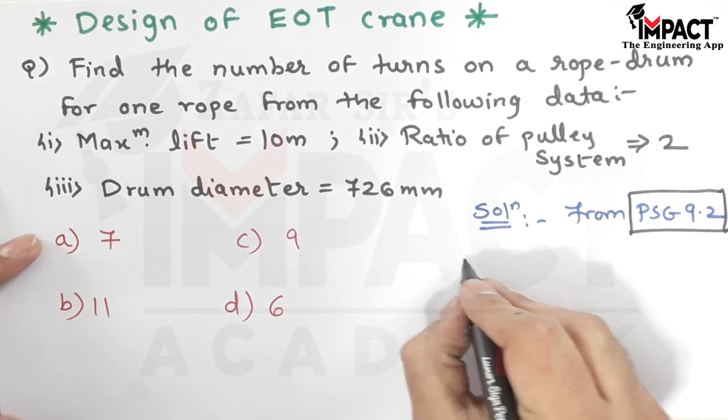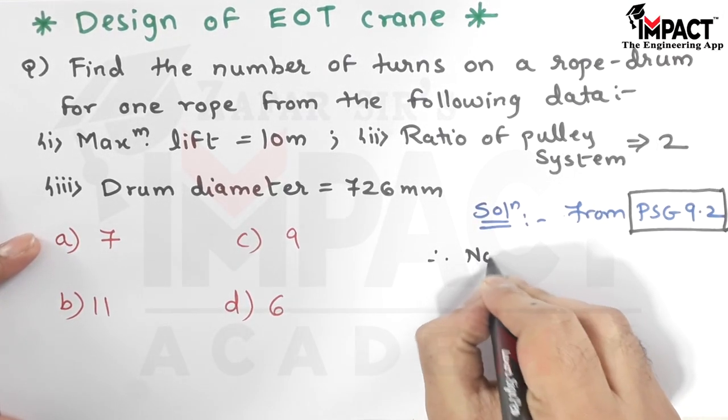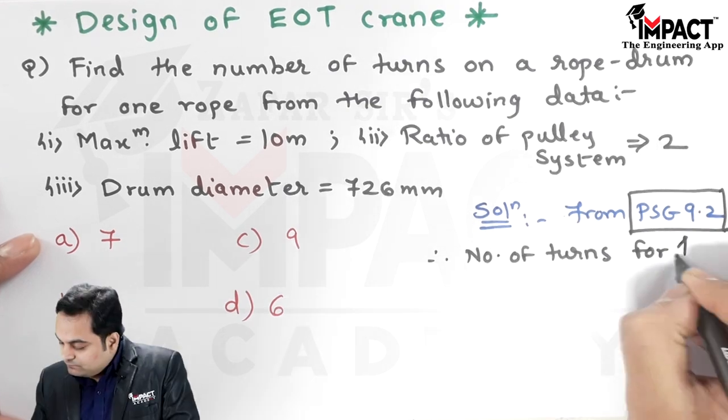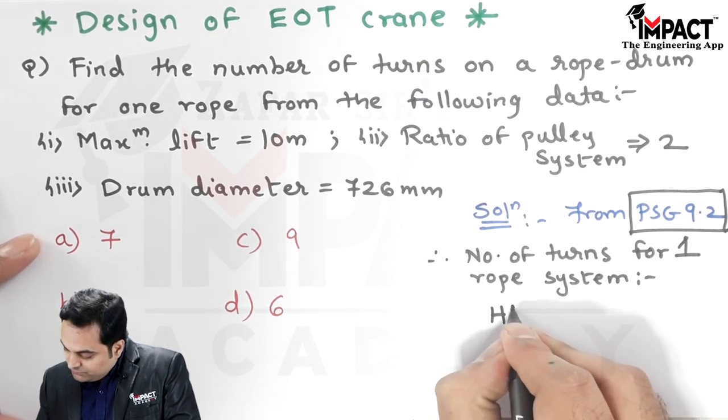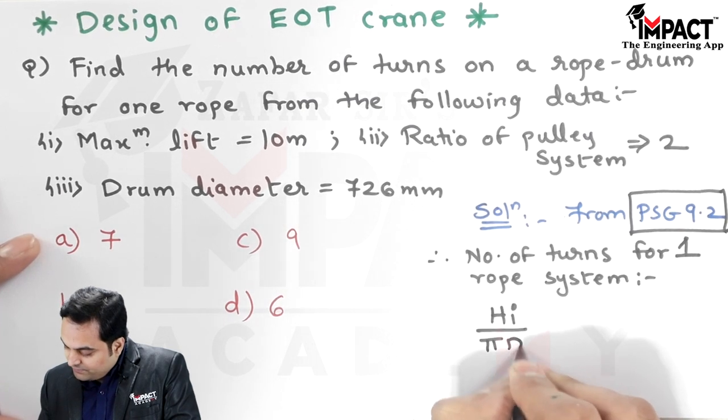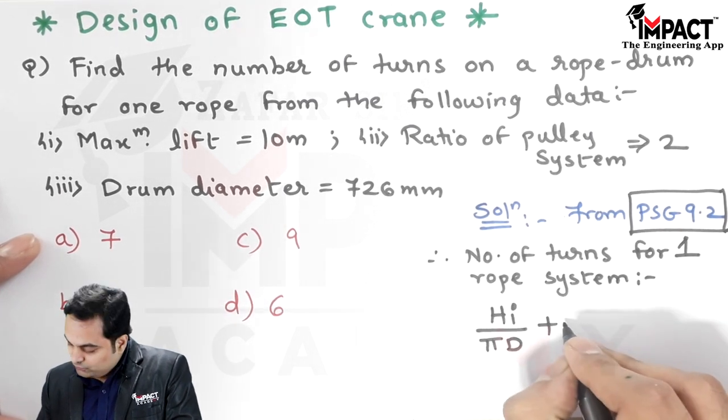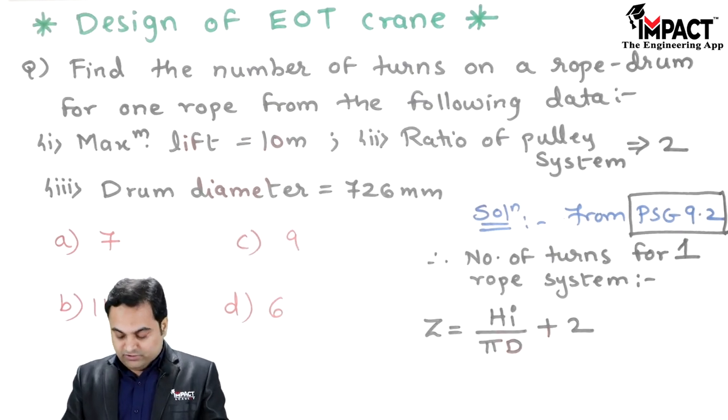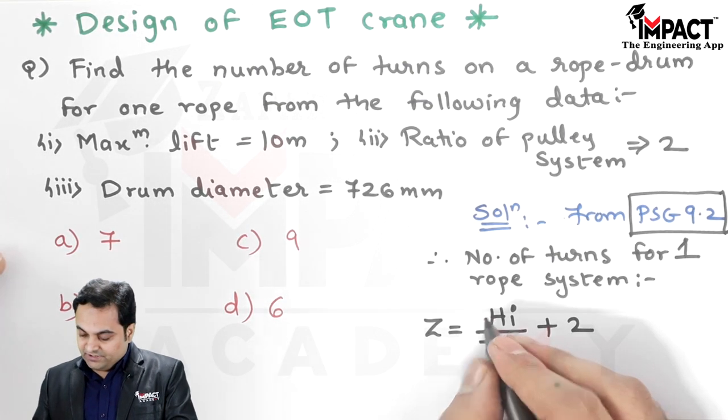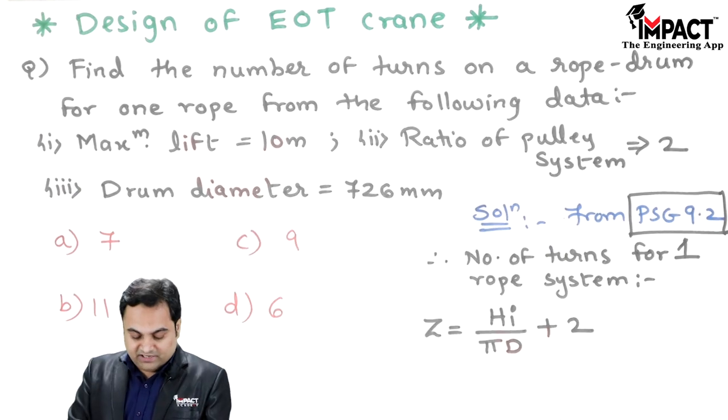Therefore, number of turns for one rope system: Z equals H into i upon pi D plus 2. So that's the formula. Now here H indicates the hoisting height or the maximum lift.